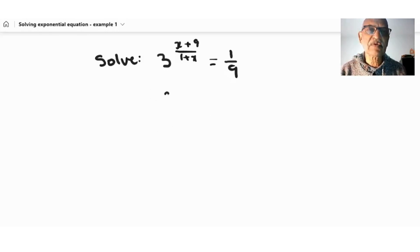So 3 to the x plus 9 over 1 plus x equals 1 over 3 squared. And then we have 3 to the x plus 9 over 1 plus x equals 3 to the power of minus 2.